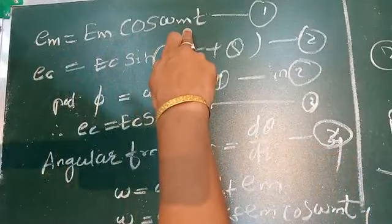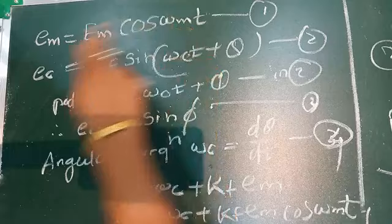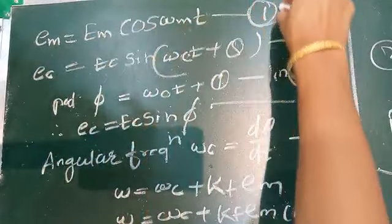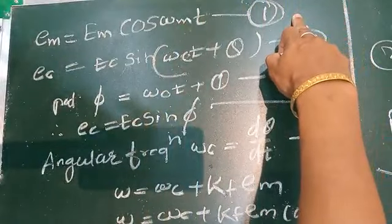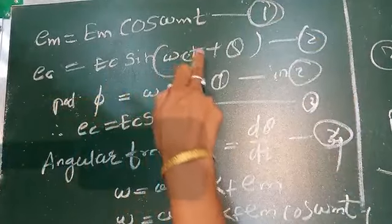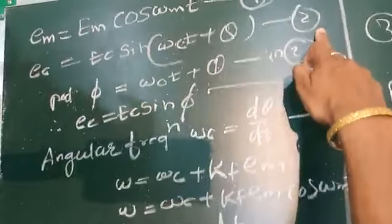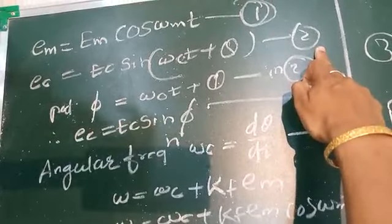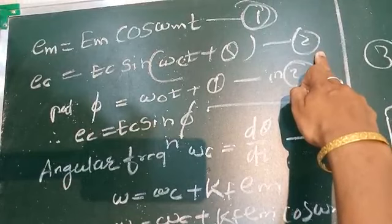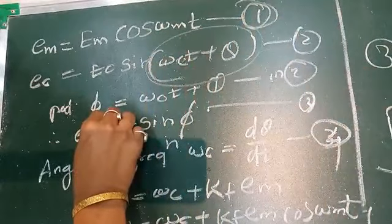First we look at the waveforms. The modulating signal is mathematically expressed as: em = Em cos(ωm t) — this is Equation 1, representing the modulating wave, the original information signal. The carrier wave is: ec = Ec sin(ωc t + φ) — this is Equation 2, representing the carrier wave.